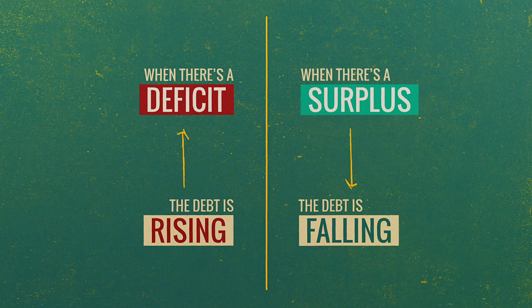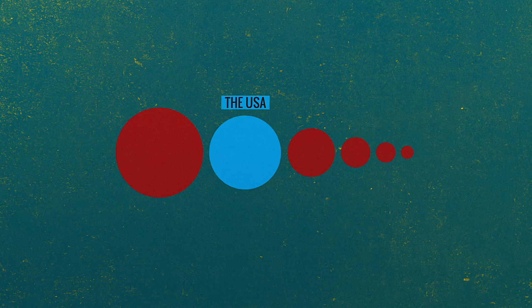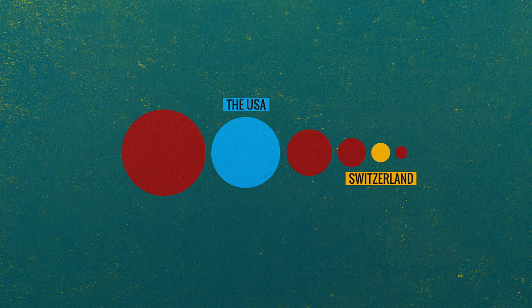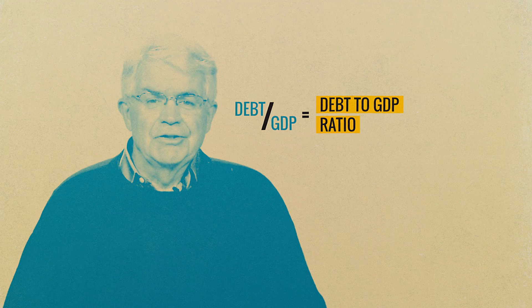We'd like to measure the debt relative to some factor that describes how big the economy is. A debt of a certain number of billions in the U.S. means much less than the same size debt in a small country like Switzerland. So we control for the size of the economy by dividing the debt by GDP, giving us the debt-to-GDP ratio.